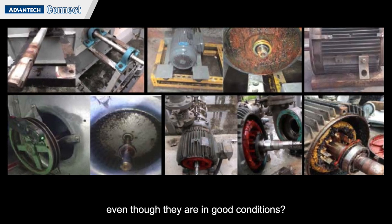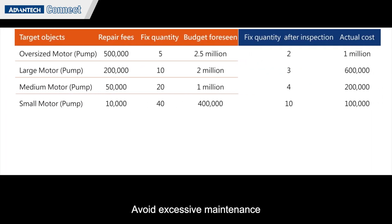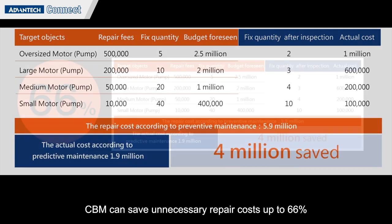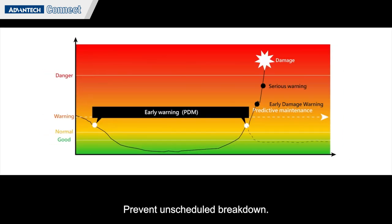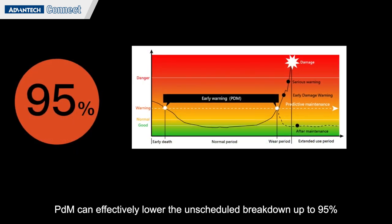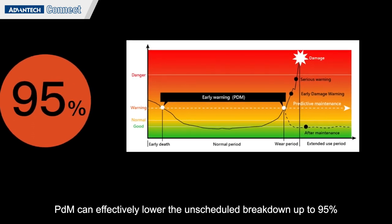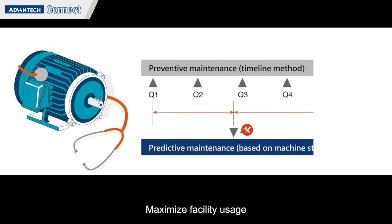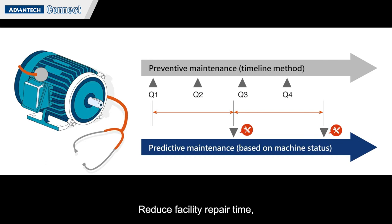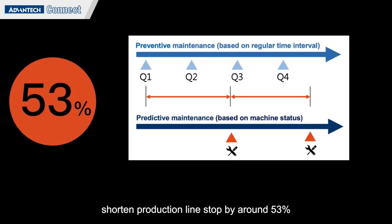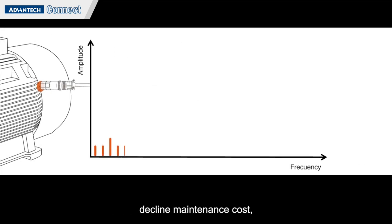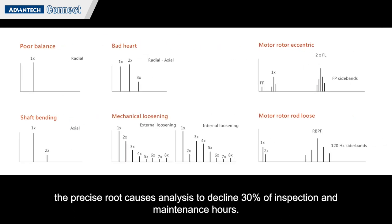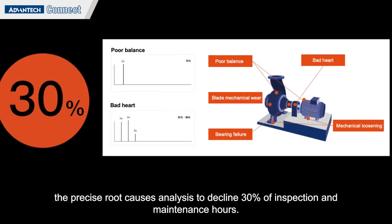Benefit achievements: Avoid excessive maintenance — CBM can save unnecessary repair costs by up to 66 percent. Prevent unscheduled breakdowns — PDM can effectively lower unscheduled breakdowns by up to 95 percent. Maximize facility usage and reduce facility repair time, shortening production line stoppages by around 53 percent. Decline maintenance costs — precise root cause analysis can reduce inspection and maintenance hours by 30 percent.